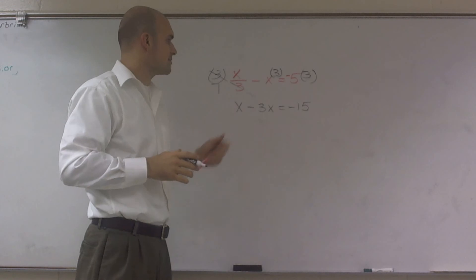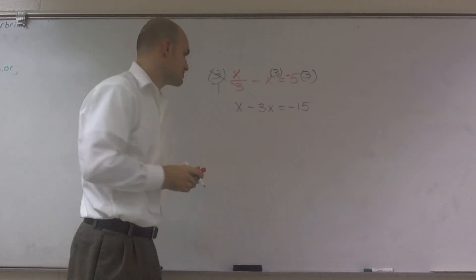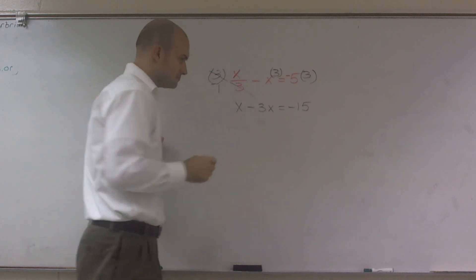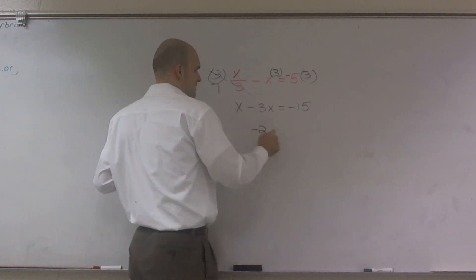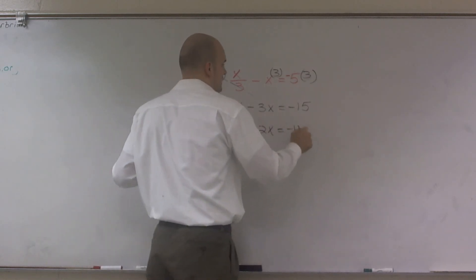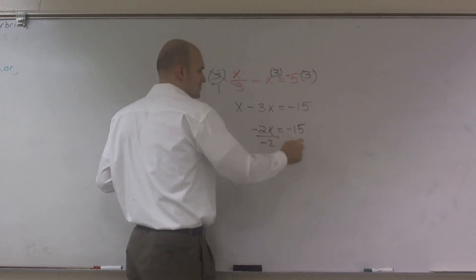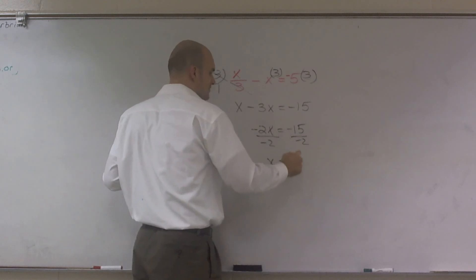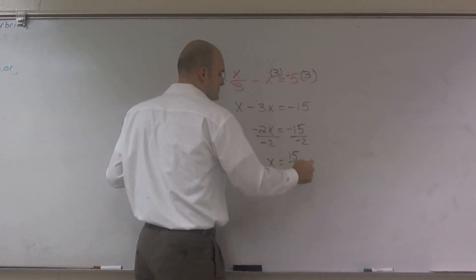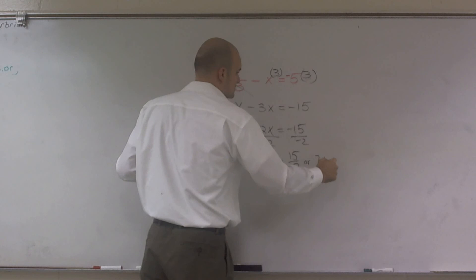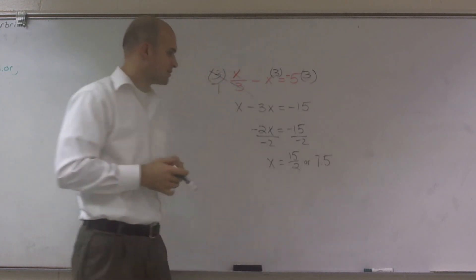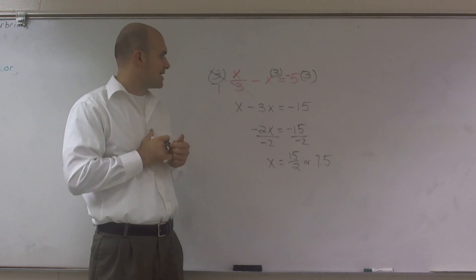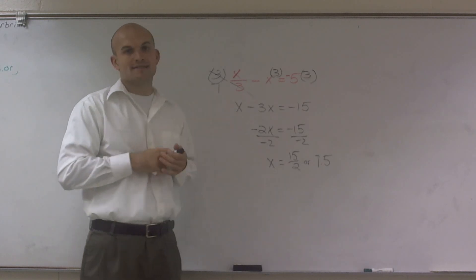Now, x minus 3x is going to equal negative 2x, so negative 2x equals negative 15. From here, I can divide by negative 2, and I get x equals positive 15 halves, or you can write that as a decimal as 7.5. That's how you solve this problem when you have two variables and one has a denominator.